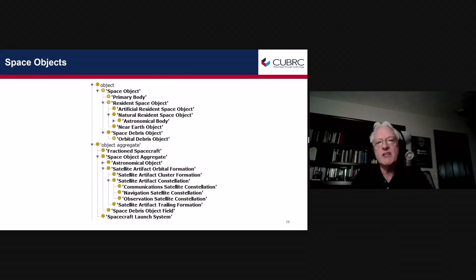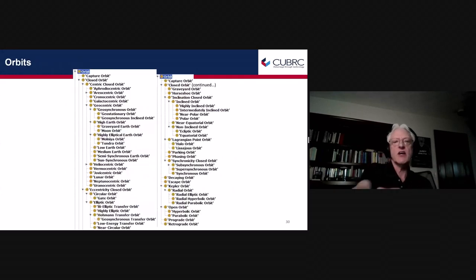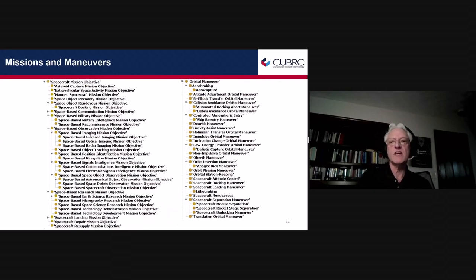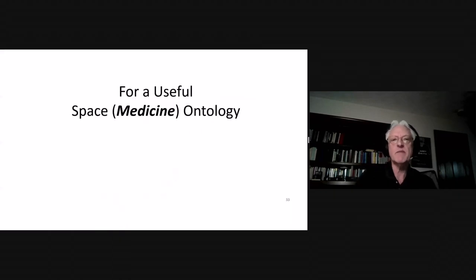We have object aggregates, orbits. This is the ontology of different kinds of orbits. You thought the idea of orbit was simple and it is not simple. Then we have missions and maneuvers, sensors. And now we get back to medicine.